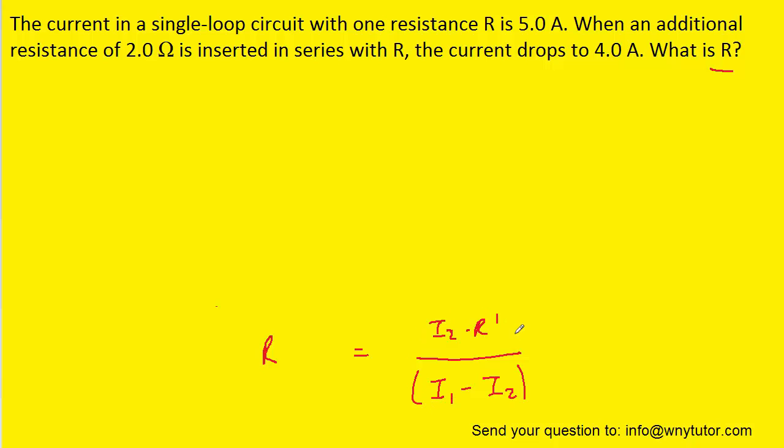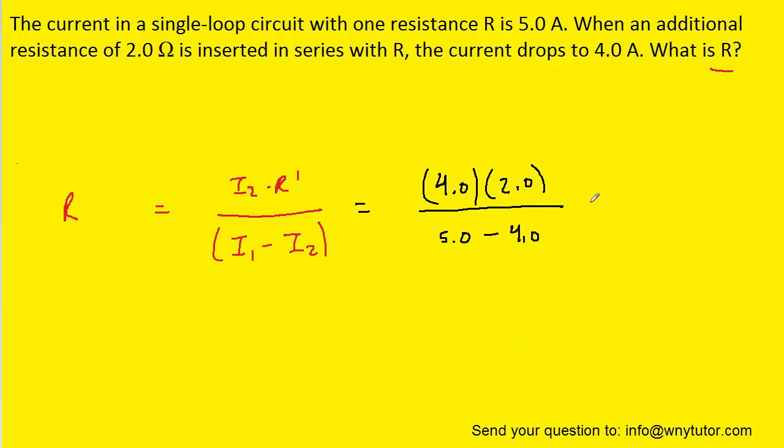We can now plug in the known values for the currents as well as the resistance. And when we compute that, we get a value of 8.0 ohms. So that is the value of the unknown resistance.